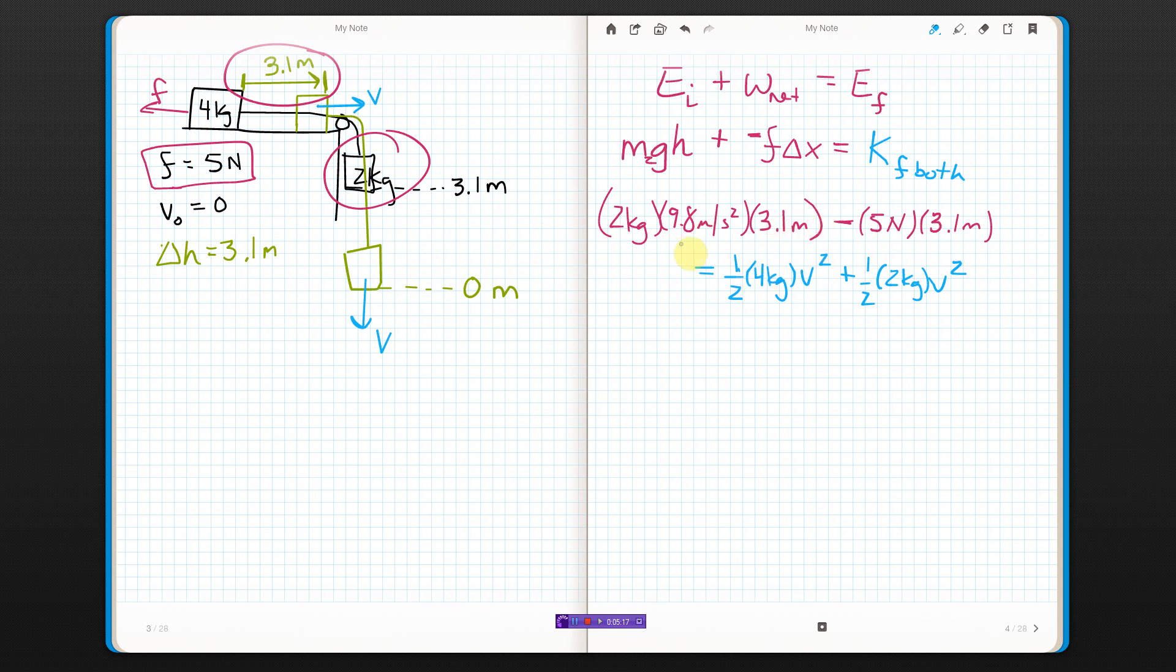Okay. Alright. The only thing I don't know is v, which is what I'm looking for. So, I'm going to pull that v out. I'm going to factor out the v squared at the end here. So, what I'll have here in this term is just one half of 4, which is 2, plus, I'm going to have one half of 2, which is 1. Okay? I still got all this stuff on the other side. I'm just doing the blue side really fast. Okay? So, that's going to be 3 v squared on that side. On the other side, I've got 2 times 9.8 times 3.1. That's going to give me 60.76 joules.